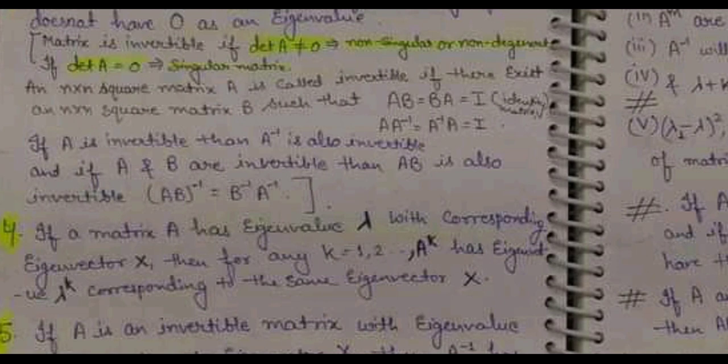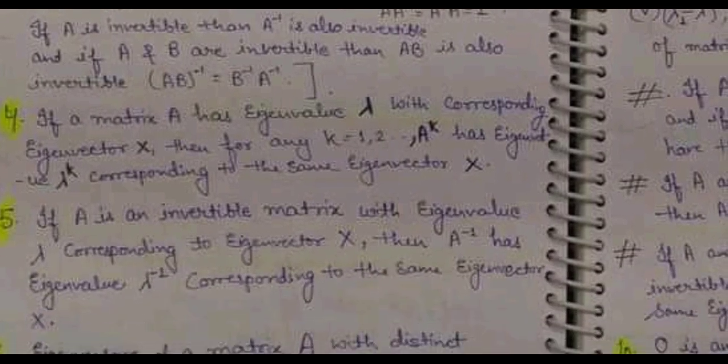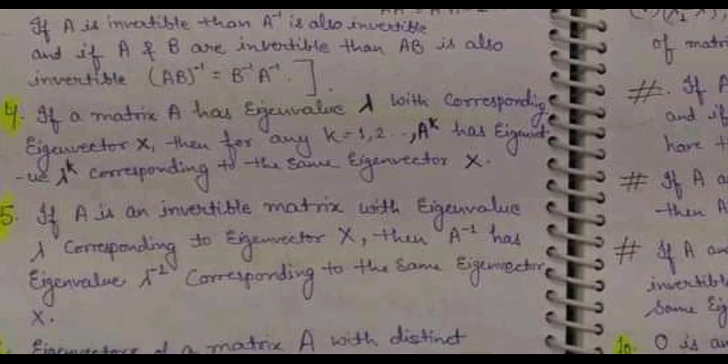If A is invertible, then A-inverse is also invertible. And if A and B are both invertible, then AB is also invertible — that means AB whole inverse will be equal to B-inverse times A-inverse.